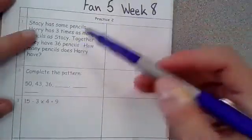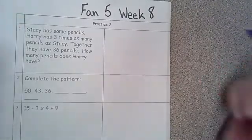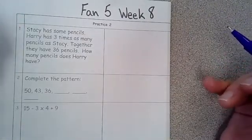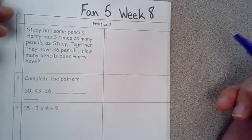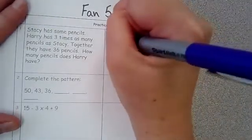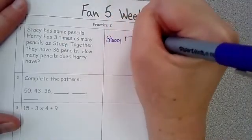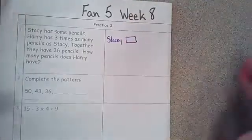Alright, so again, this is a multiplicative comparison. You learned these in fourth grade. You need to draw the bars. If you don't draw the bars, you are not going to get it correct. Alright, so here we go. Stacy has some pencils. Alright, so write Stacy and give her a box that has some pencils in it.